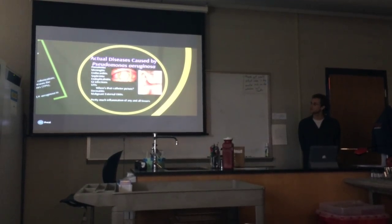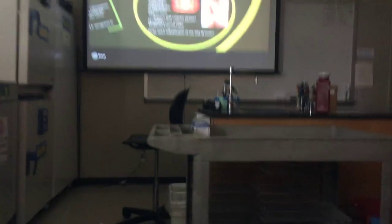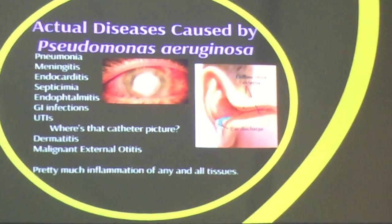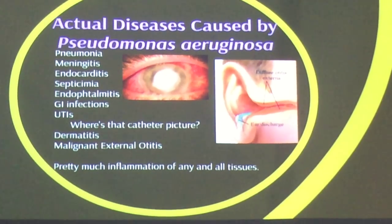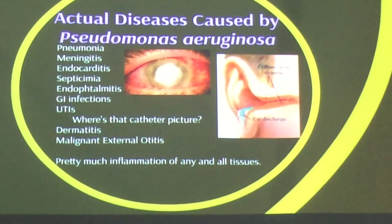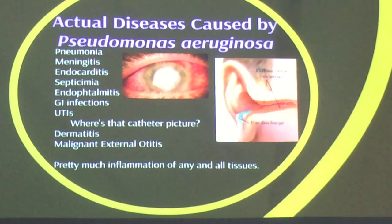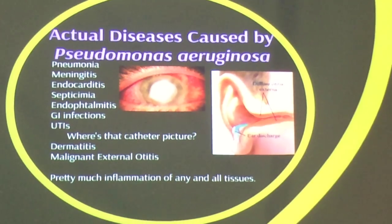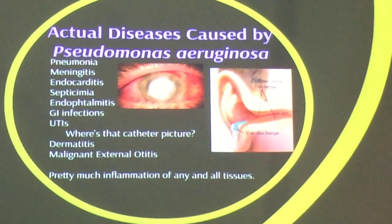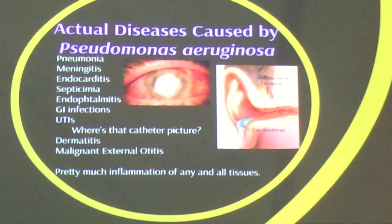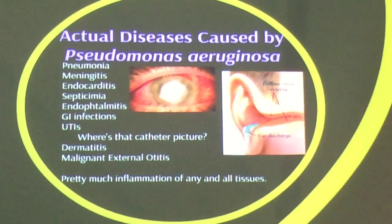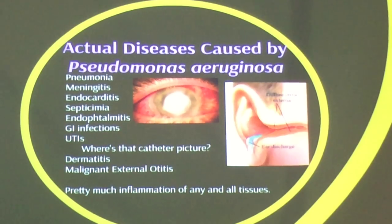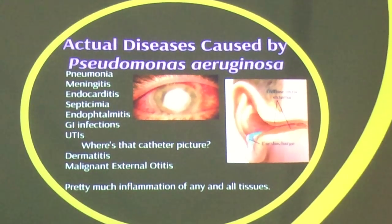Actual diseases caused include: pneumonia — inflammation of the lungs with pus in the air sacs; meningitis — infection of the meninges covering the brain and spinal cord; endocarditis — infection of the inner lining of the heart, usually caused by septicemia spreading to the heart; endophthalmitis — infection of the vitreous humor of the eye; GI infections; UTIs; dermatitis; and malignant external otitis, also known as swimmer's ear, which can spread into bone, nerve, or brain. Essentially inflammation of any and all tissues is possible.